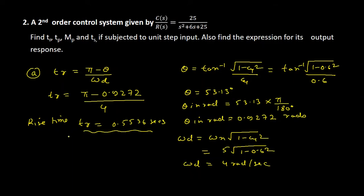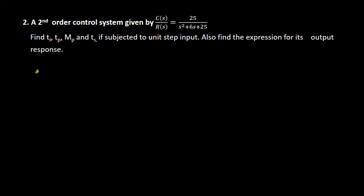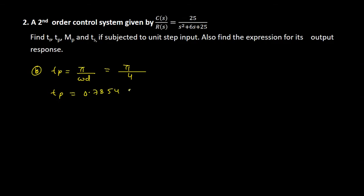Now we will find the peak time. tp equals pi divided by omega_d. Since omega_d is 4 radians per second, tp equals pi divided by 4, which gives tp equal to 0.7854 seconds. So this is the peak time.